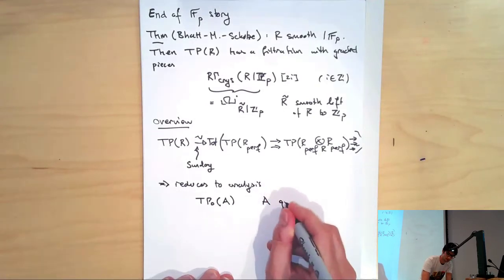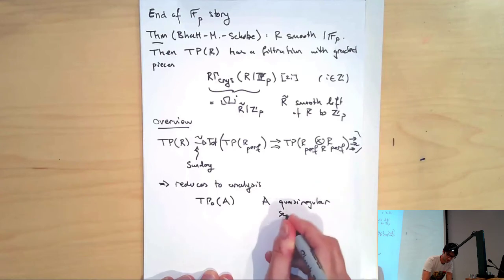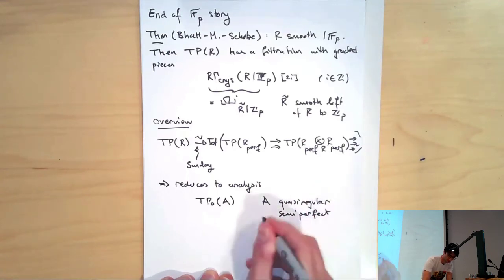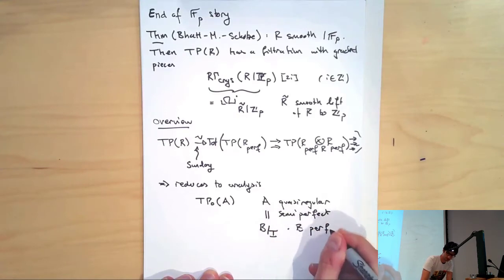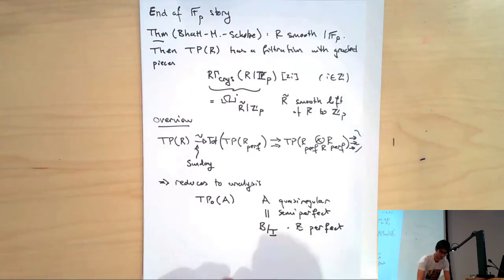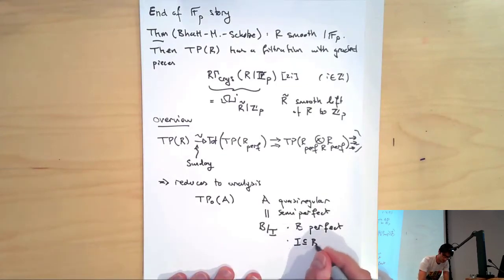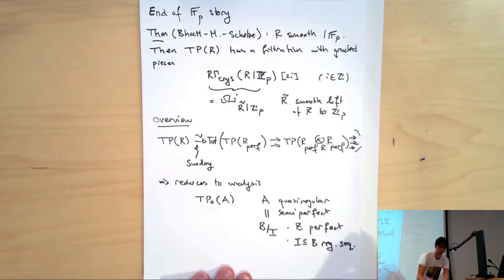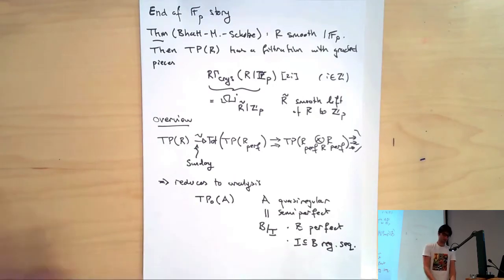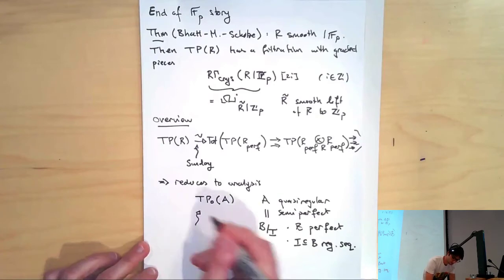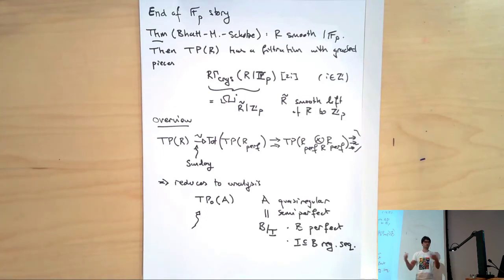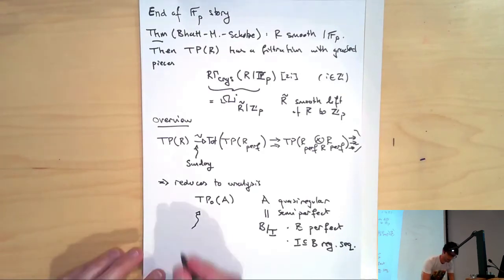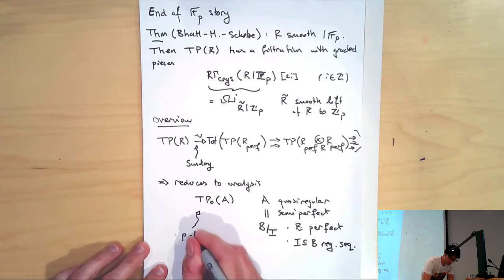Where here A is quasi-regular semi-perfect. I remind you that this means I can write A as B mod I, where B is itself perfect — every element has a unique p-th root — and I is some nice ideal, for example generated by a regular sequence. If we think about the spectral sequence describing it, it will be built up out of all the topological Hochschild homology groups of A, and we'll be able to read off that this is p-torsion free.